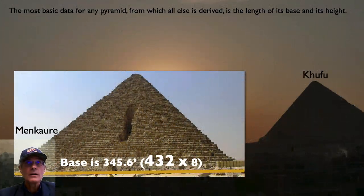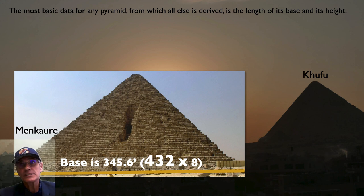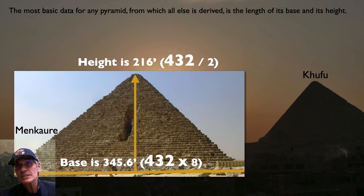So let's look at Menkaure. So the base of Menkaure, you've got 345.6 feet, which is 432 times 8. We go to the height of Menkaure, it's 216 feet, 432 times 2. Wow.